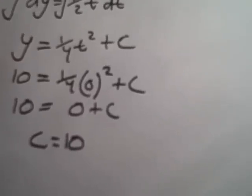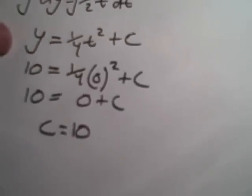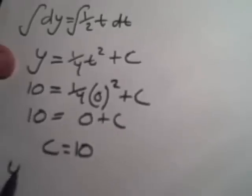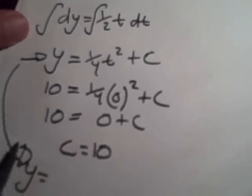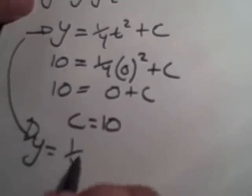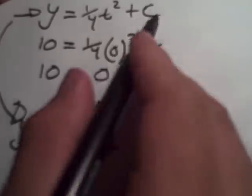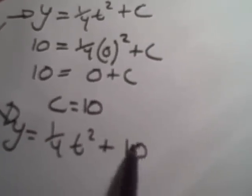So our answer, now we have a C. Now we know what that constant is. So our answer is simply y equals 1 fourth t squared plus 10.